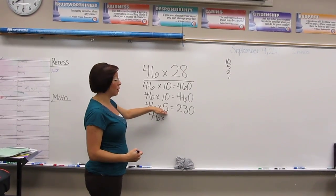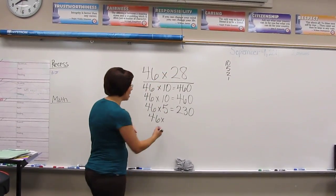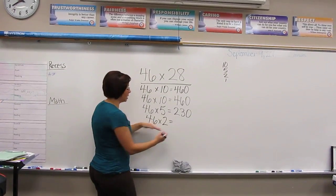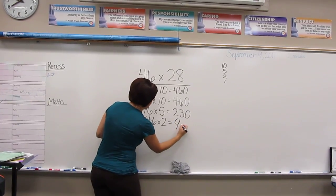Now I know that I don't have another 5 because, again, that would leave me at 30. So I'm going to go down to a times 2. So I do 46 times 2 is 92.